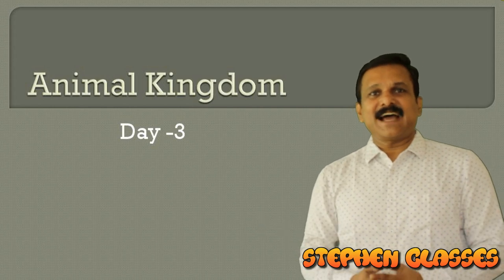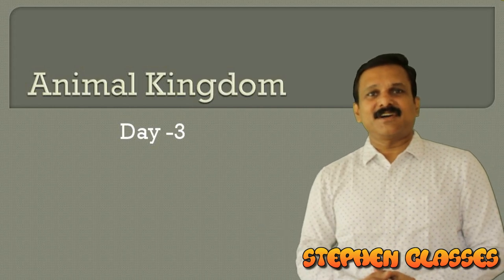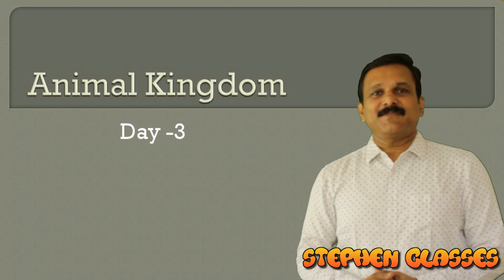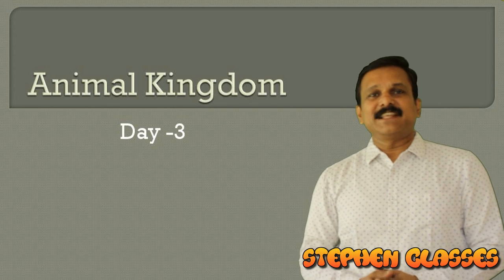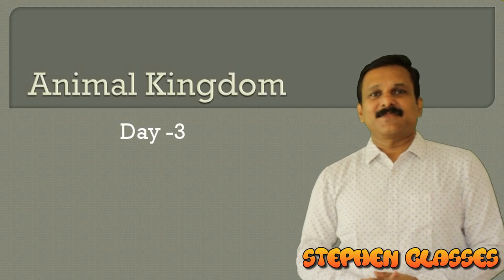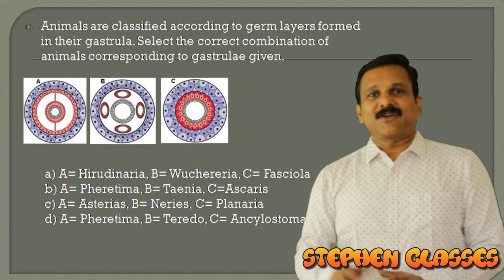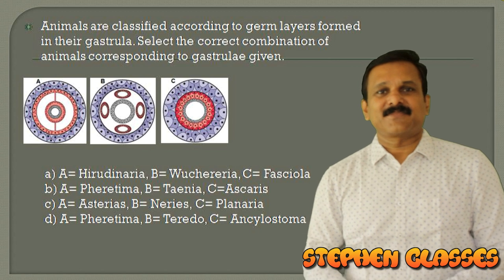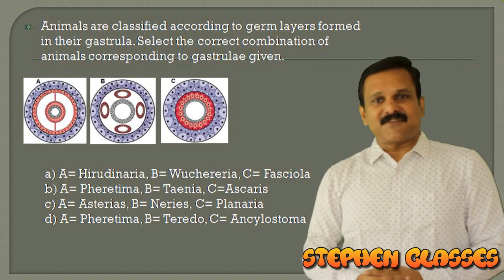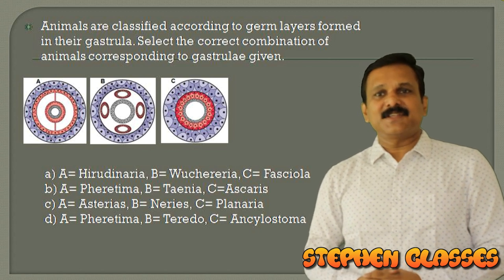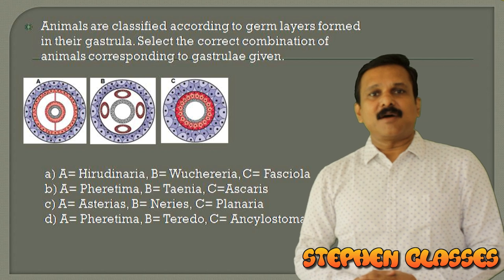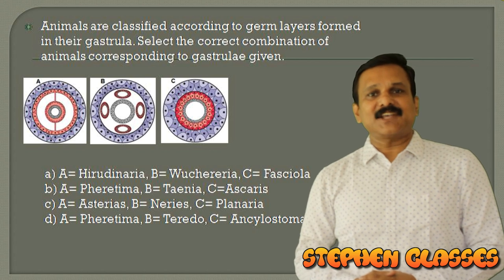Welcome to another live session of crash course in biology. Today we will discuss the animal kingdom. We are going to the first question: animals are classified according to the germ layers formed in their gastrula.